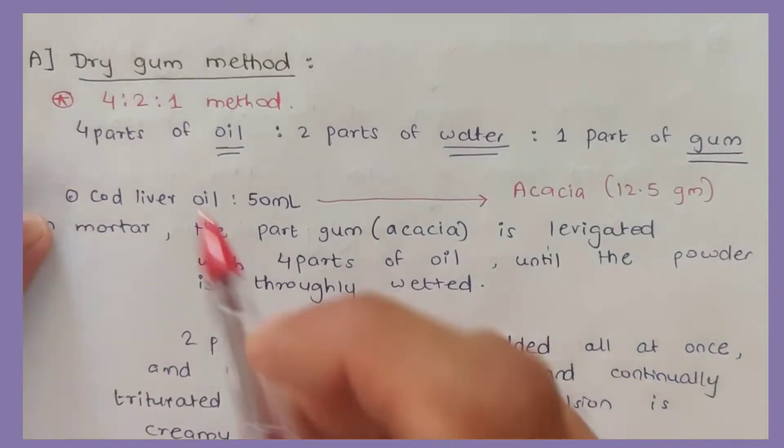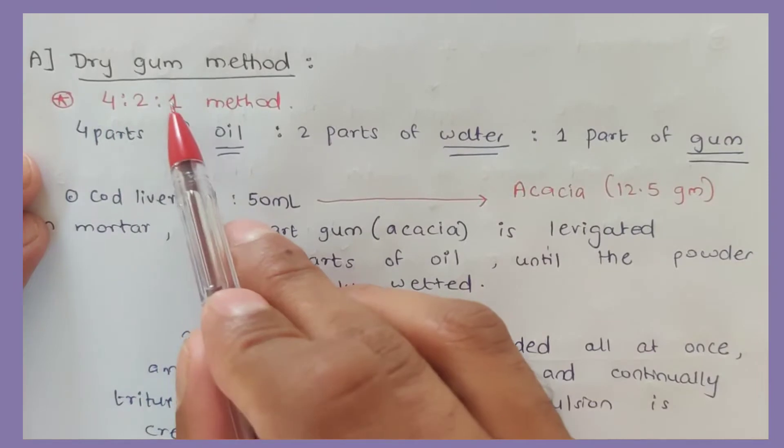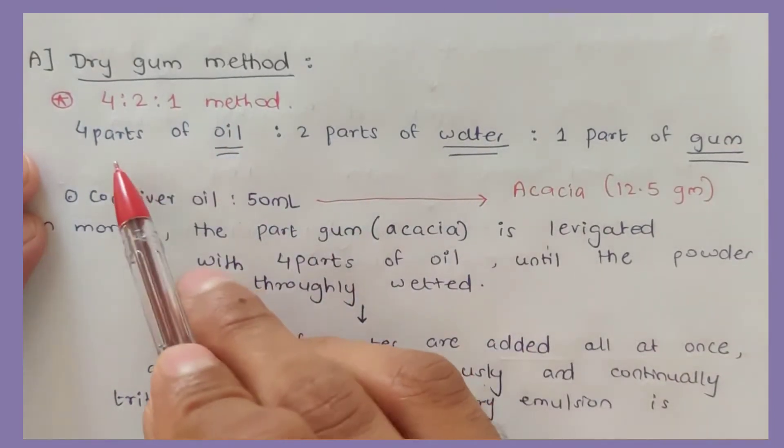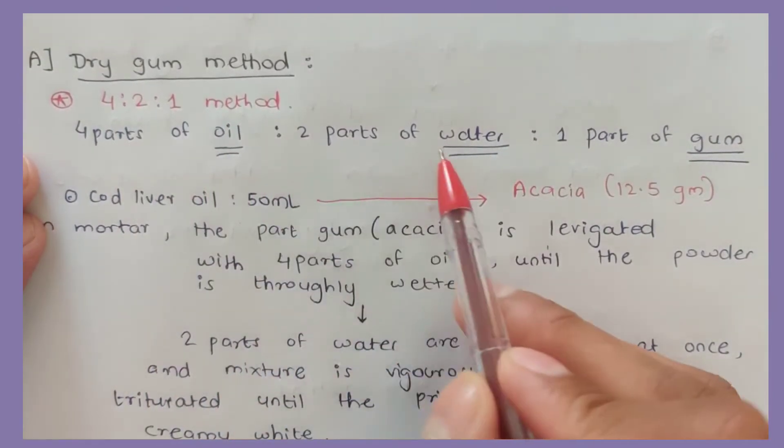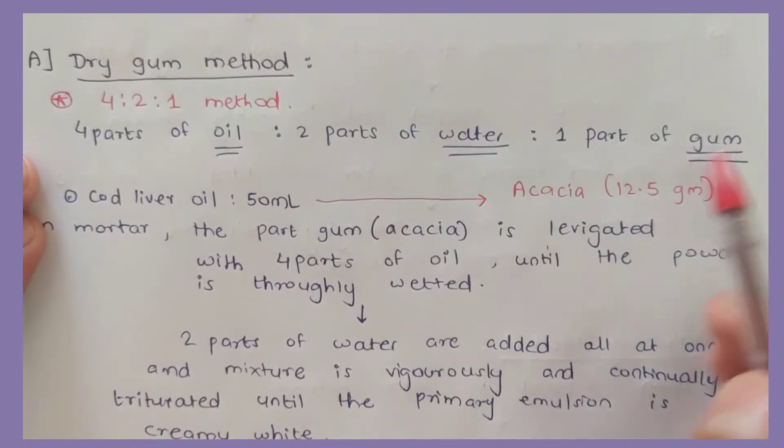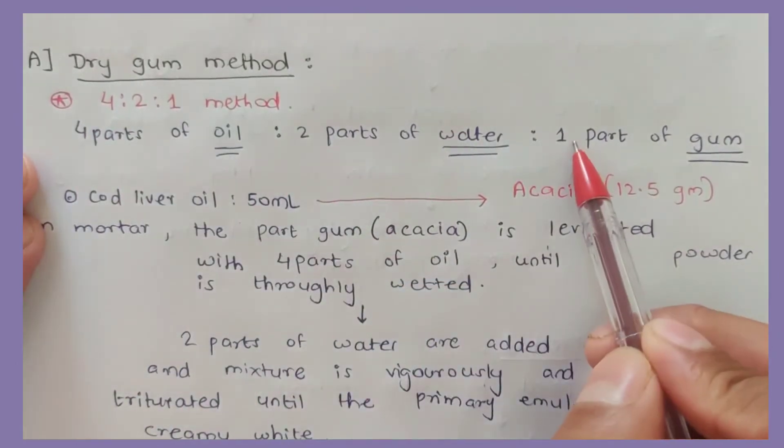Starting with dry gum method: it is also known as 4:2:1 method, meaning four parts of oil, two parts of water, and one part of gum. Oil to water to gum - O:W:G.